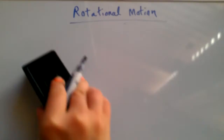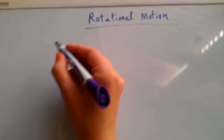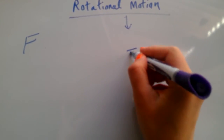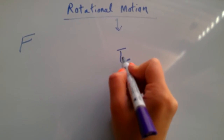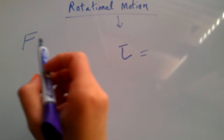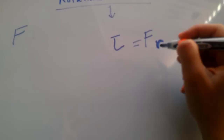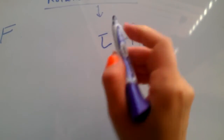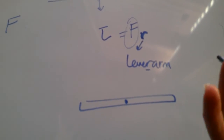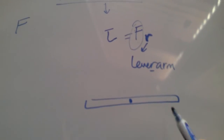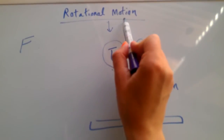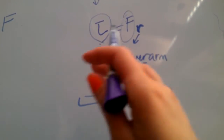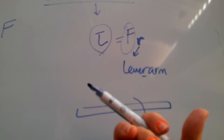After acceleration in linear motion we had force, and now we have the same analog in rotational motion, which we call torque. Torque is denoted by the Greek symbol tau, and it equals force times the lever arm. The lever arm is the distance between where the force is applied and the point about which the object can potentially rotate. Torque is a rotational force — it is what is able to rotate an object about some point.